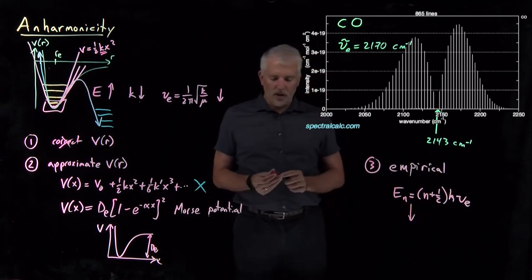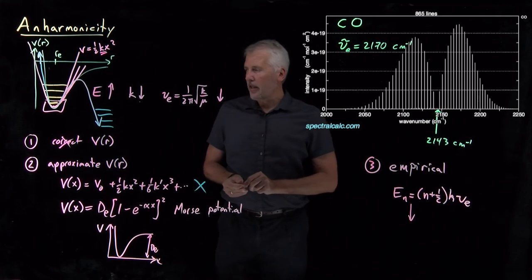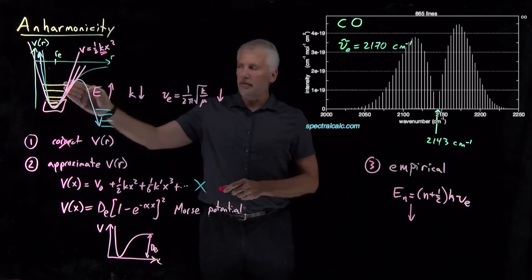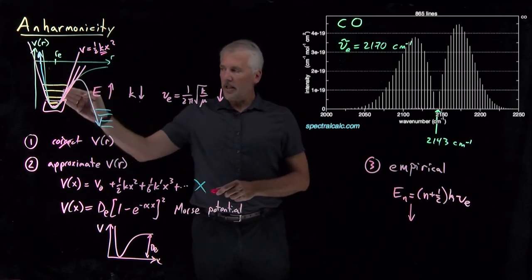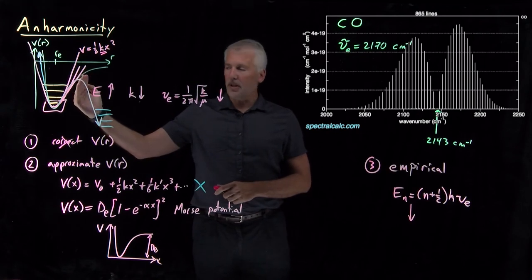As a way of building in anharmonicity, we'll just take that general trend that the higher we go in this energy level, the higher we go in this energy well, the softer the potential energy function becomes.